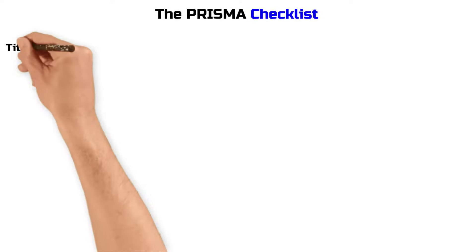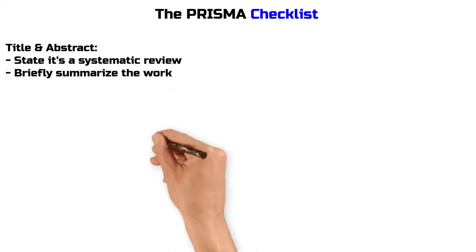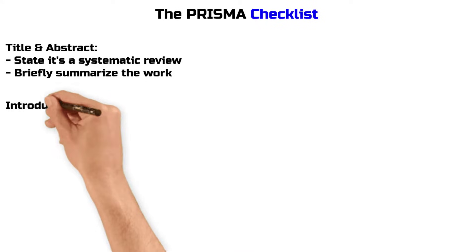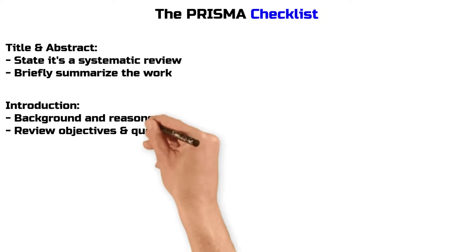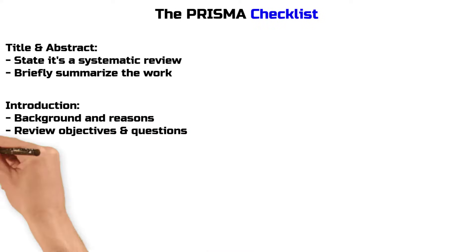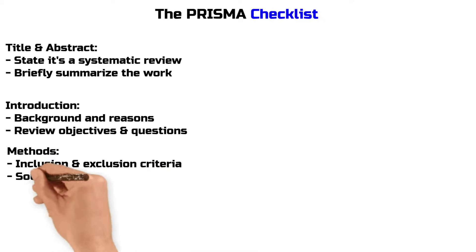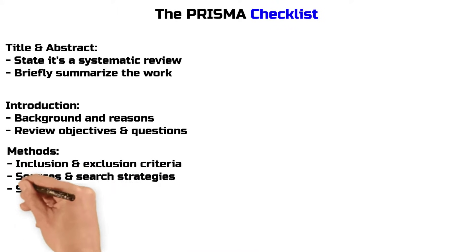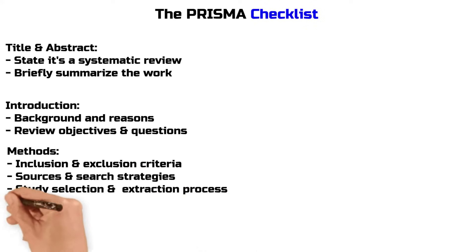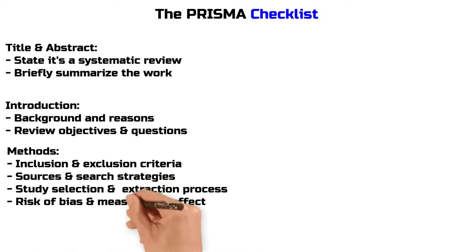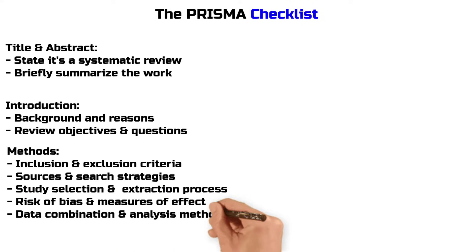Here is a brief summary of the checklist. Title and Abstract: clearly state that this is a systematic review and provide a brief overview of the work. Introduction: describe the background and reasons for the review, and clearly state the review's objectives and questions. Methods: set the inclusion and exclusion criteria for studies, detail the information sources and search strategies, explain the selection and data extraction process, and specify methods for assessing risk of bias and measures of effect. Describe how data from different studies were combined and analyzed.